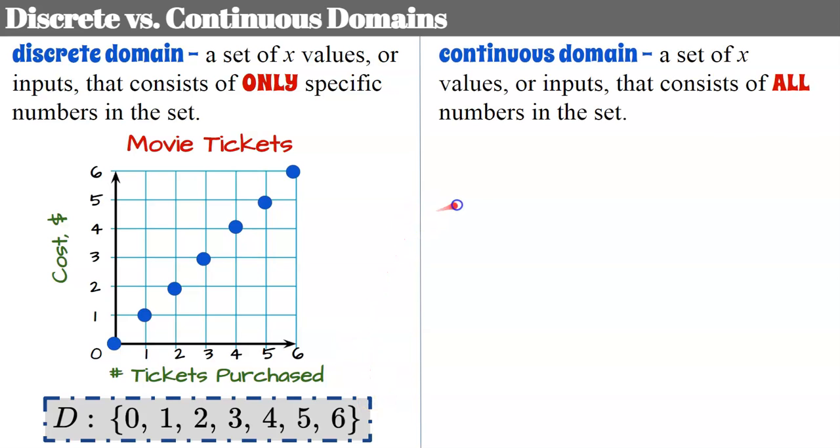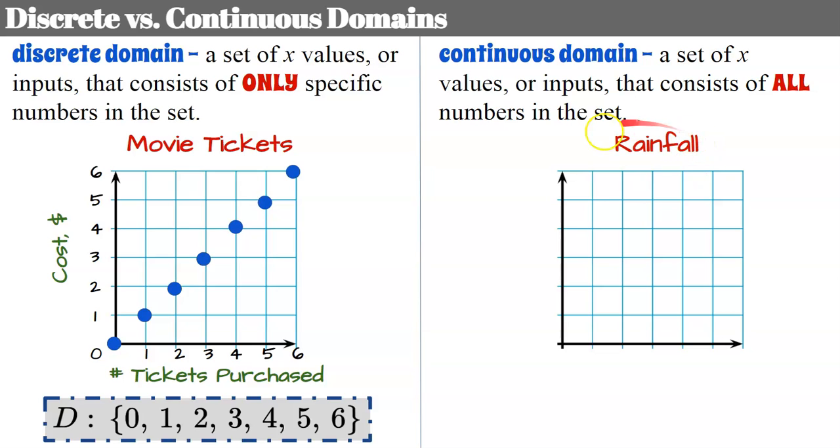All right. Now let's talk about continuous domain, which is a set of x values or inputs that consists of all the numbers in the set. So if we use a real world example of rainfall, our x or input, our domain is going to represent the time in hours that it's been raining. And we're going to use, I've changed my intervals. So this will be zero, one half, one, one and a half, two, two and a half, three. And our output is going to be the amount of rain in inches that falls. And I've got intervals of one half over here. So when I go to graph this data, here's my line.